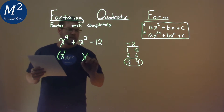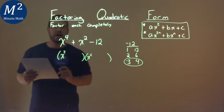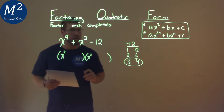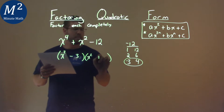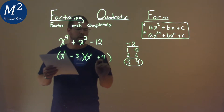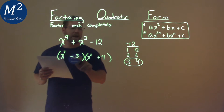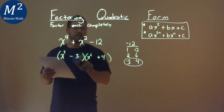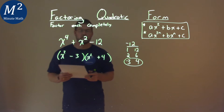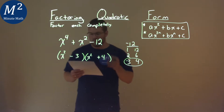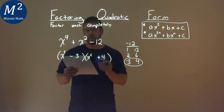Our form here would be x squared times x squared, which gives us x to the fourth. The minus 3 and then the plus 4. Minus 3 times 4 would be a negative 12. But when we add them, when they multiply to each x squared respectively, we get a positive 1x squared. And so, our final answer here is x squared minus 3 times x squared plus 4.